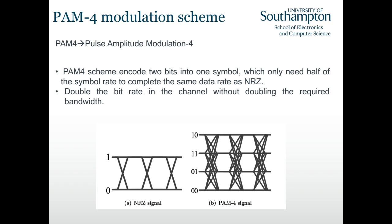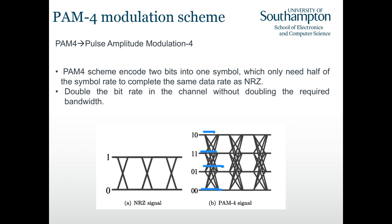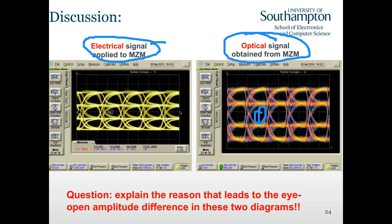Besides NRZ (BPSK), we can also use 4-PAM, which uses four amplitude levels. An interesting observation in the eye diagram for 4-PAM: the middle eye is wider than the two side eyes for the optical signal, whereas the electrical signal shows no such asymmetry. This is because the MZM transfer function is not linear — the mapping from electrical field to optical intensity is a cosine function, so equal electrical steps do not produce equal optical amplitude steps.